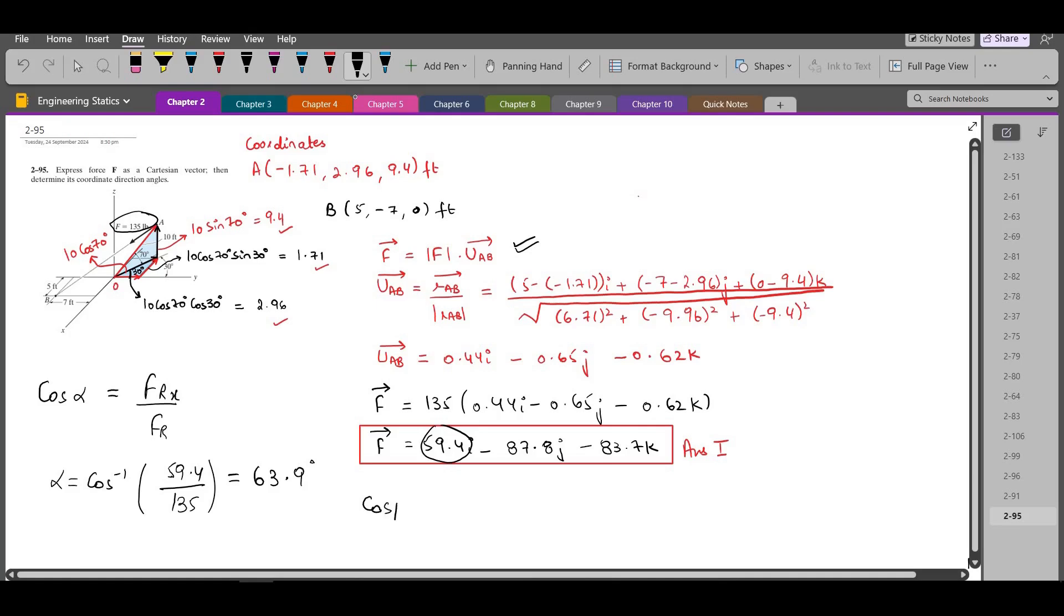So cos beta is equals to FRy over FR. So beta is equals to cos inverse of the negative 87.8 divided by 135. So beta comes out to be 130.5 degrees.